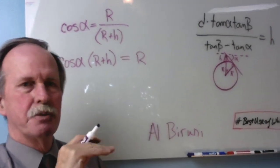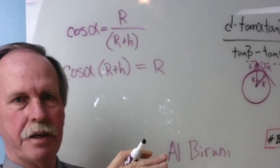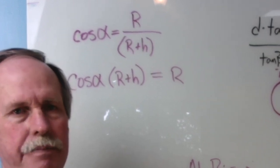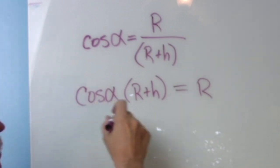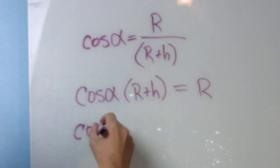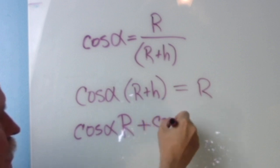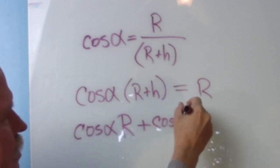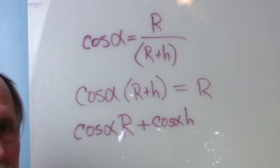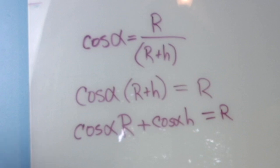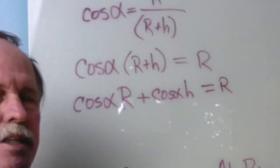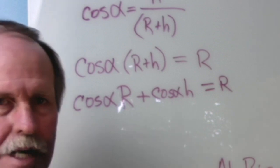We can rearrange that so that cosine alpha times the radius plus the height equals the radius of the earth. What we want to do to solve this is get all the r's on one side of the equation and then solve for it. Let's go ahead and start from here. Cosine alpha times r plus h equals cosine alpha times r plus cosine alpha times h. And all that equals the radius of the earth. We haven't changed anything.